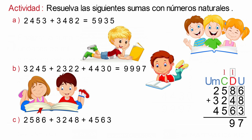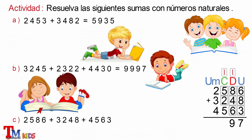Sumamos los elementos de la columna de las centenas: 1 que llevamos más 5 es igual a 6, 6 más 2 es igual a 8, y 8 más 5 es igual a 13. Escribimos el 3 y llevo 1, que lo escribimos encima de la columna de las unidades de mil.